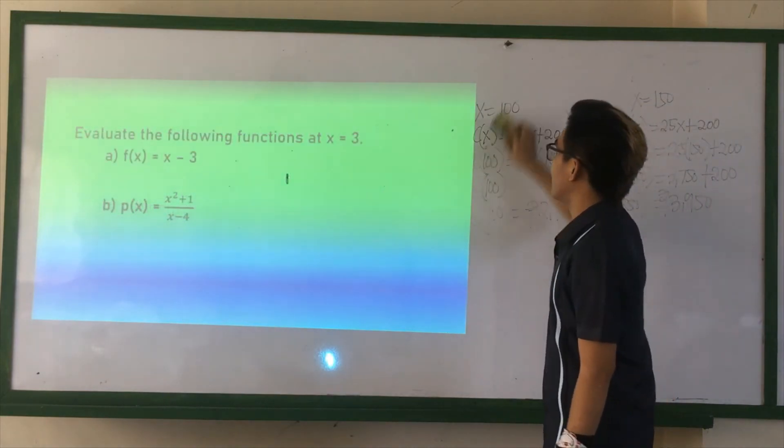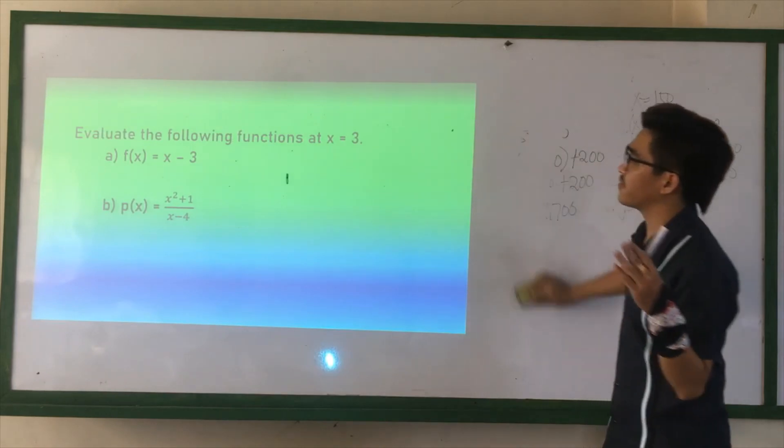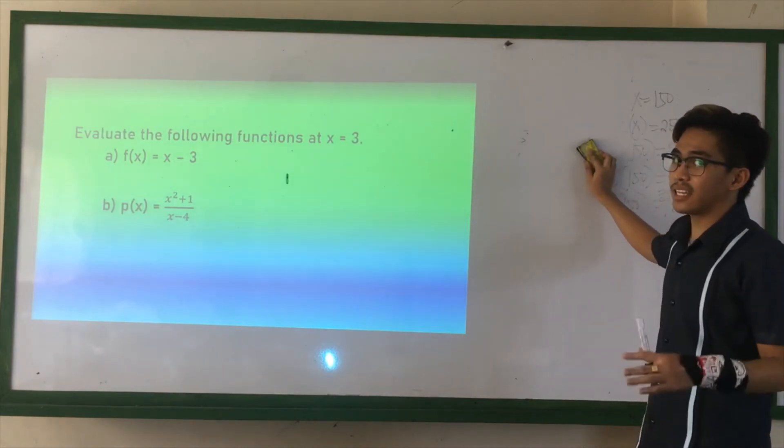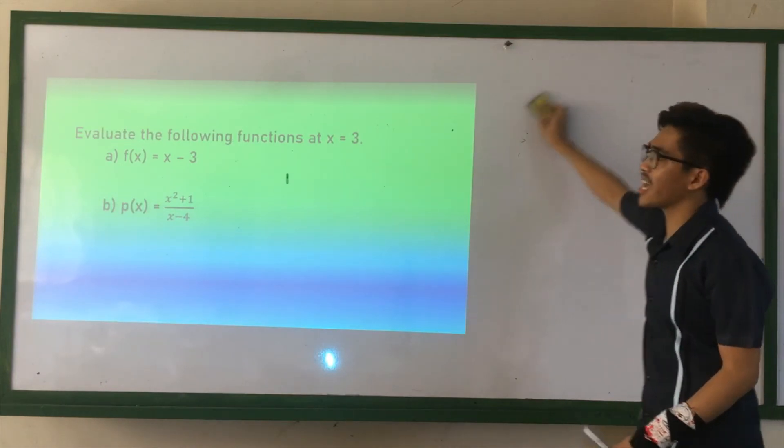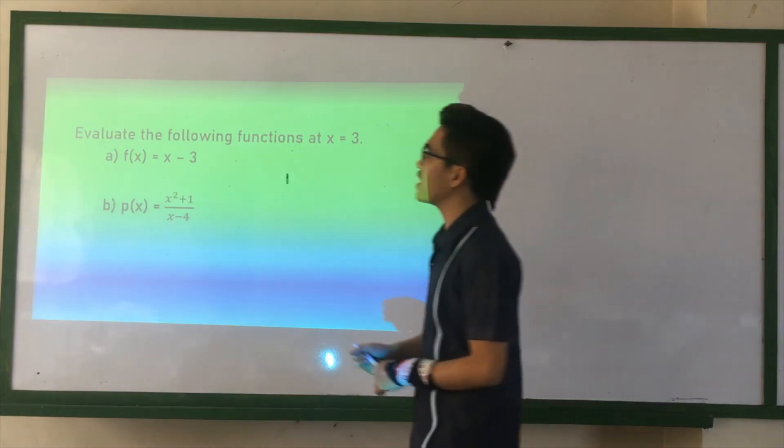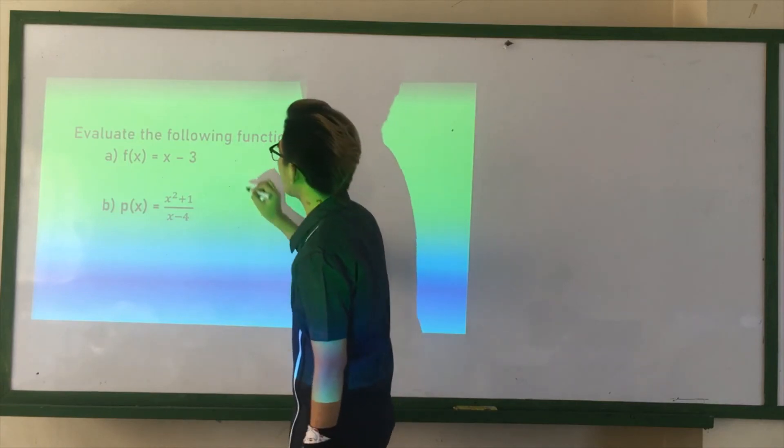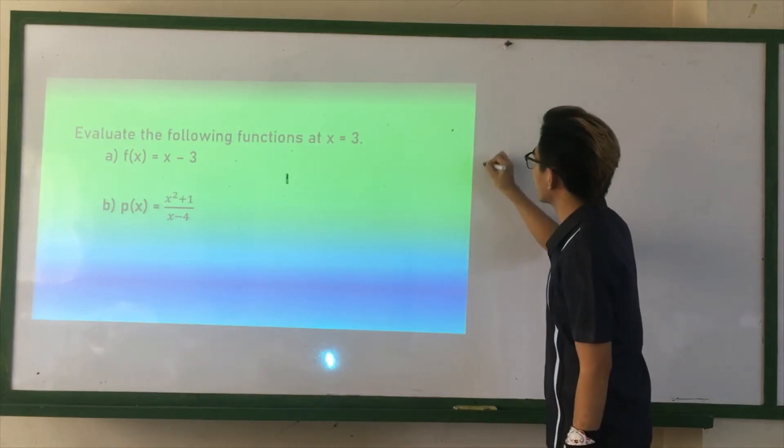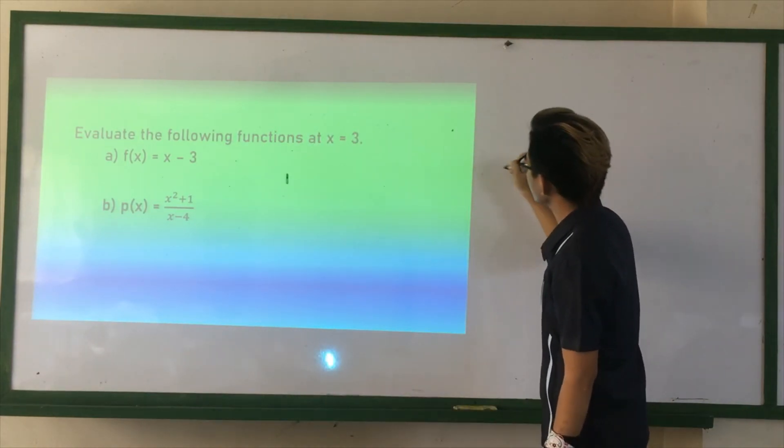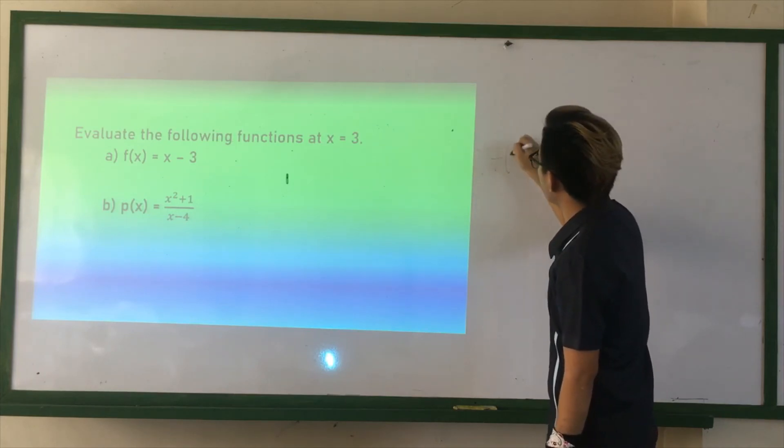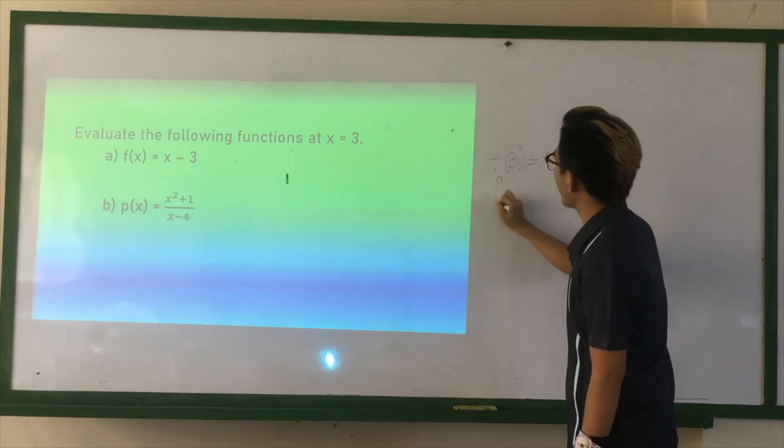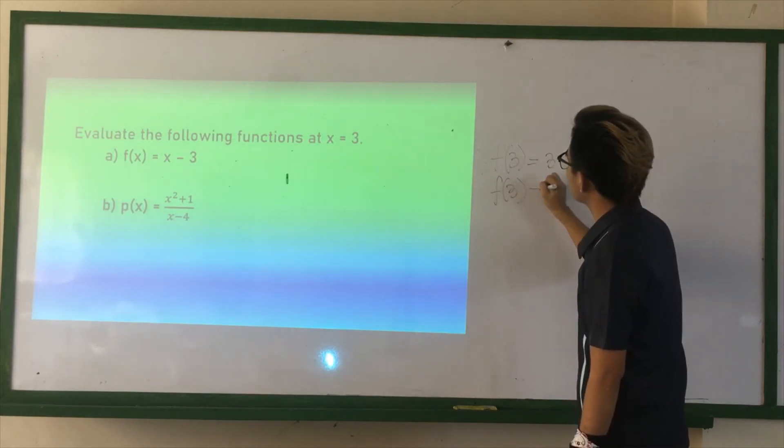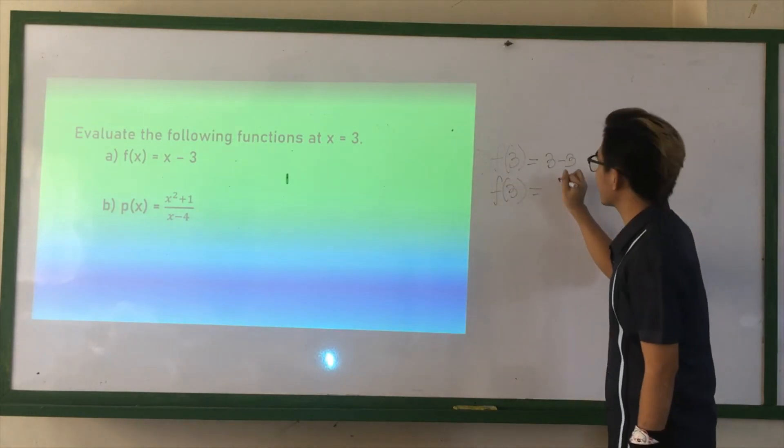This time, can you evaluate the following functions at the given value X equals 3? Of course. For the first function, remember, we just replace. So, we have F of 3 equals 3 minus 3. F of 3 equals 3 minus 3. That's 0.